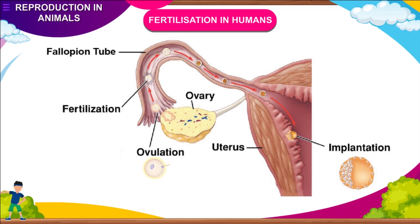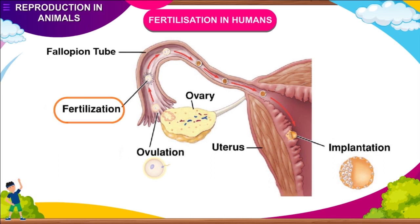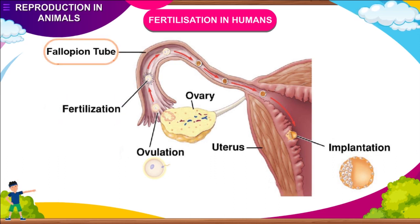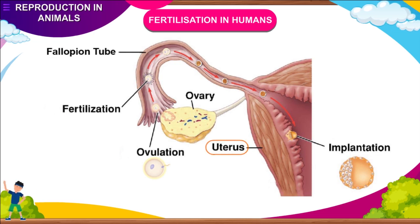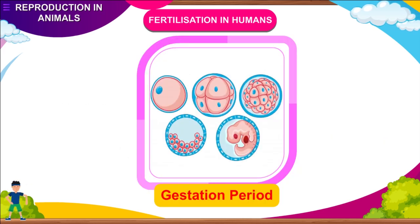Fertilization in Humans: in human beings, fertilization occurs inside the female body. When the ovum meets the sperm, it gets fertilized into a zygote. The fertilization occurs in the mid-portion of the fallopian tube. Only fertilized ova reach the uterus. After fertilization, the zygote fixes itself to the wall of the uterus and starts developing as an embryo. This process is known as implantation. The period during which the embryo develops inside the body of the female is termed the gestation period.